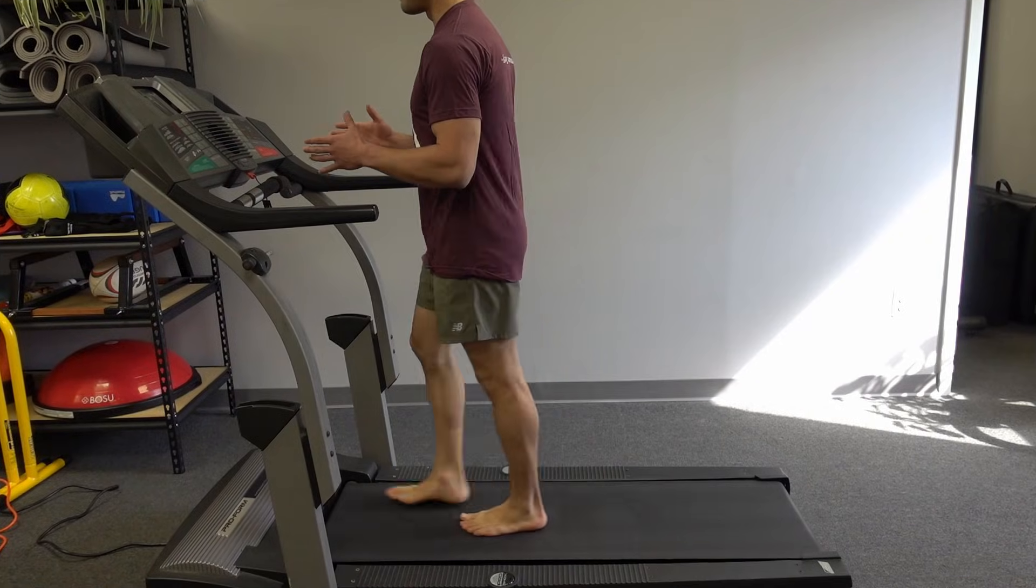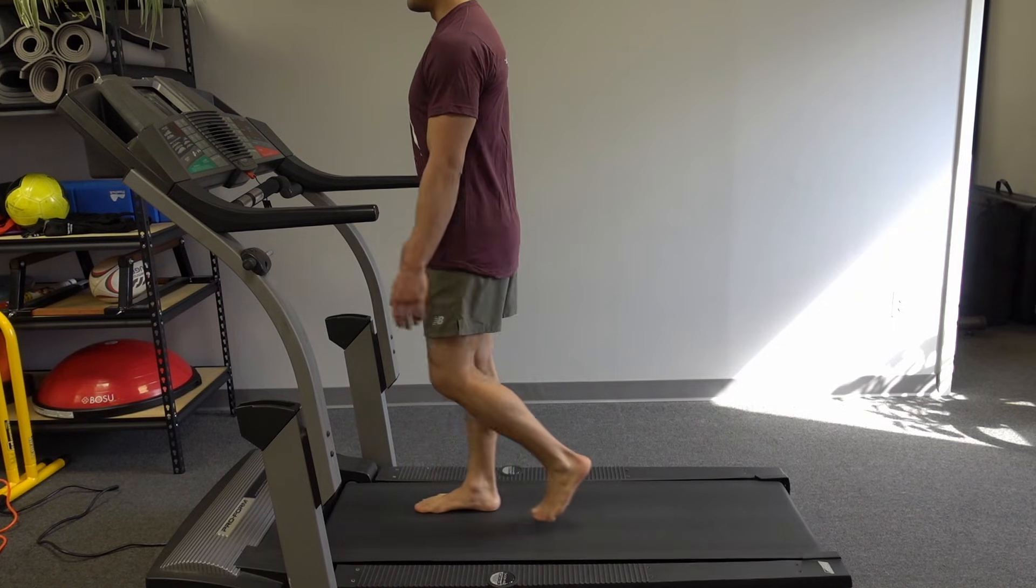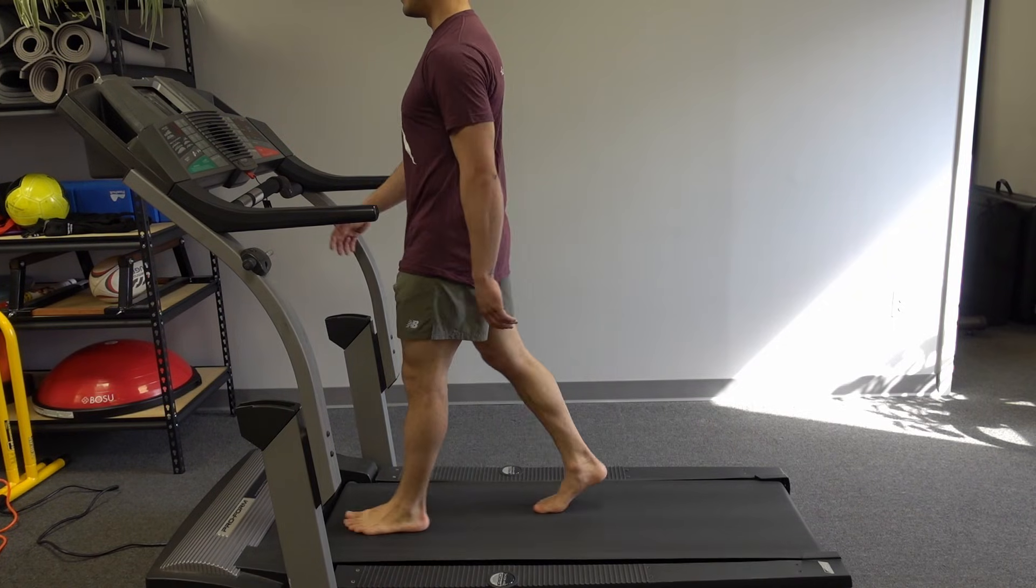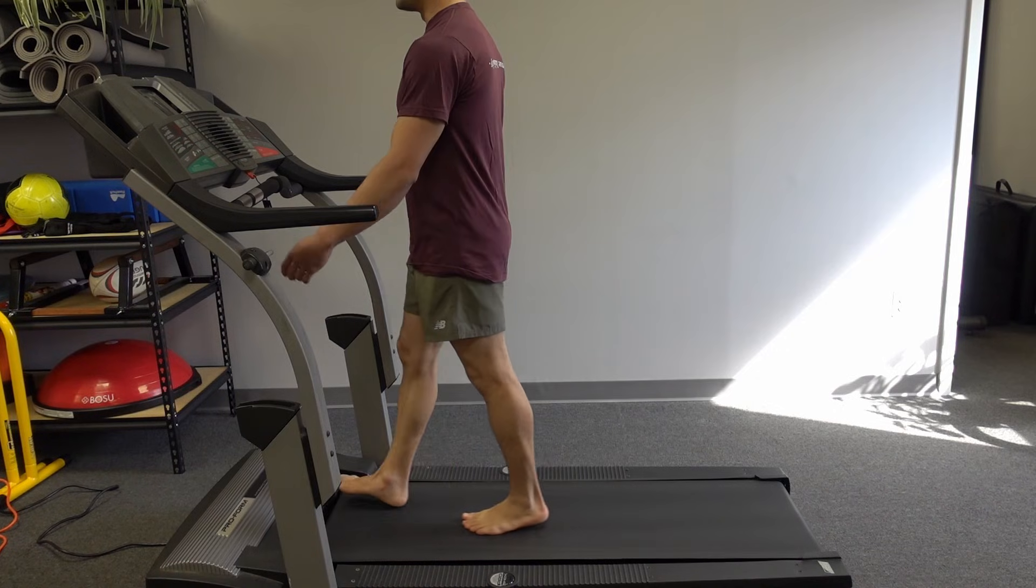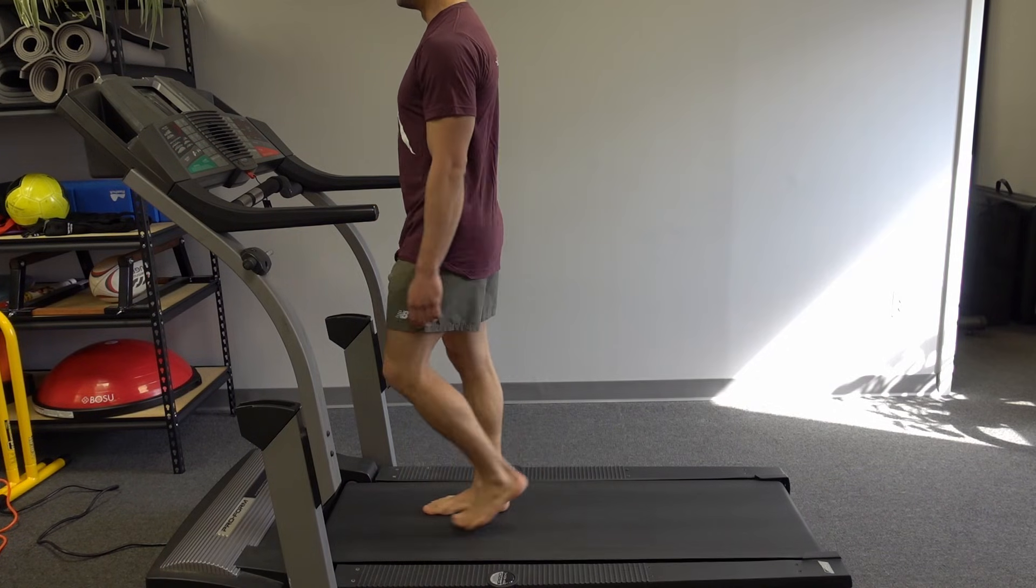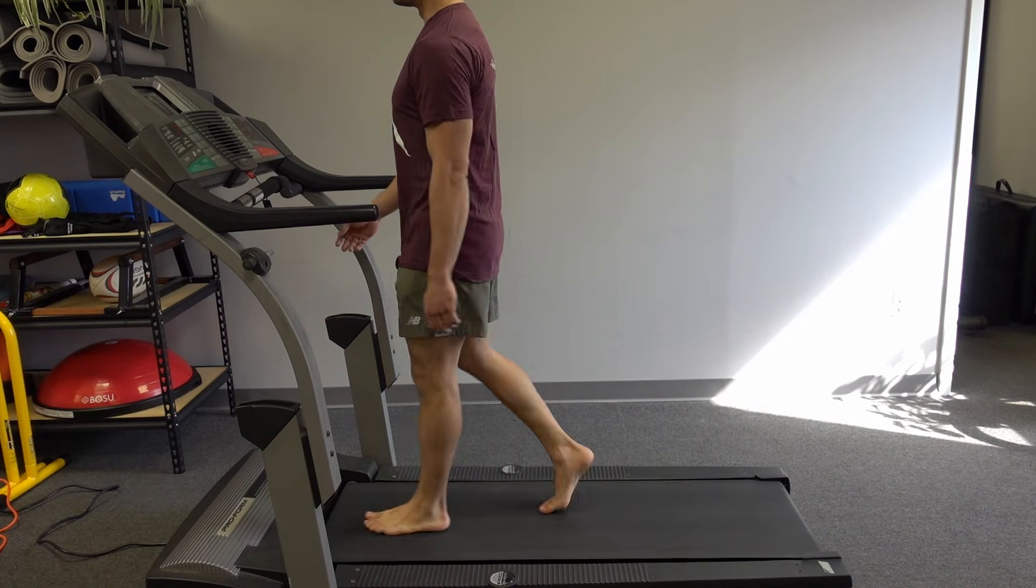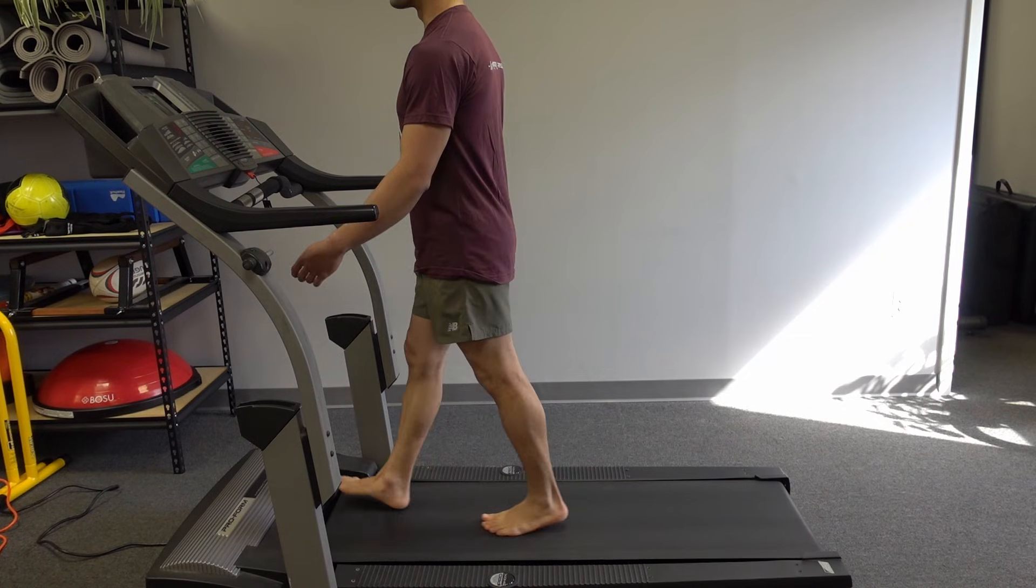So we have a concentric contraction by the hip flexors at the end of stance and beginning of swing. And an eccentric contraction by the gluteus maximus at initial contact. Now let's look at the frontal plane.